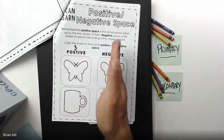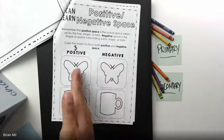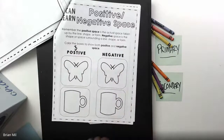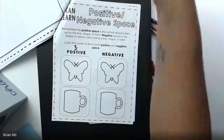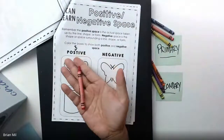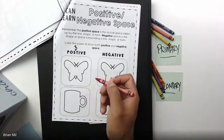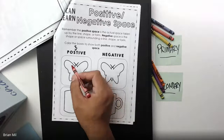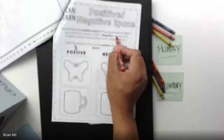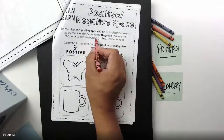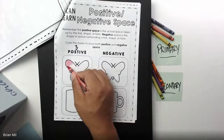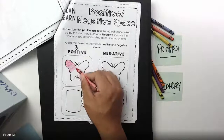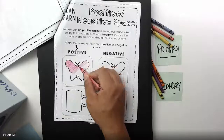We have two columns, both with relatively the same image. Using your coloring supply, you're going to color in the correct section for positive space — that means the actual space taken up by the line, shape, or form. So you should be coloring inside the object, which is basically the butterfly — color inside here.